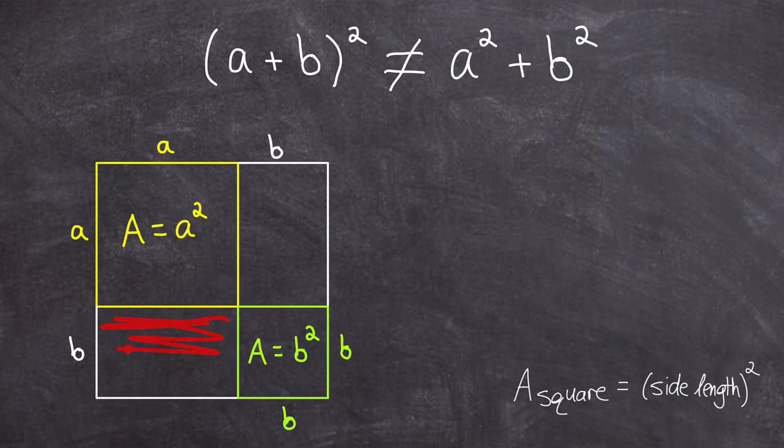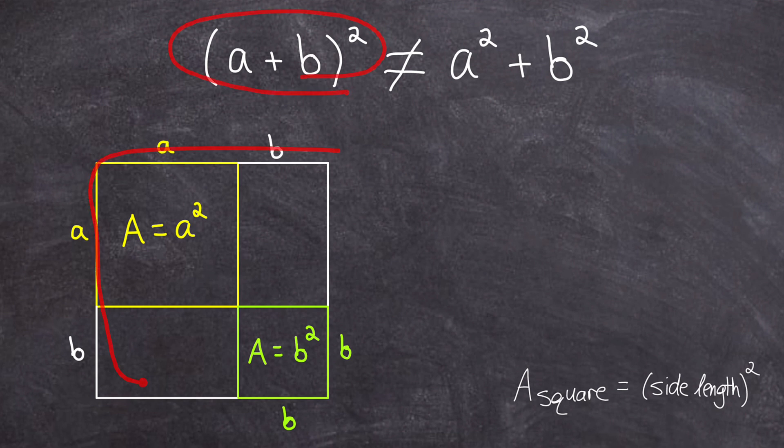There are clearly these two sections here which have not been filled in. So hopefully this diagram is an obvious representation to you of why a plus b squared, the area of this big square, is not equal to just the area of these two squares.